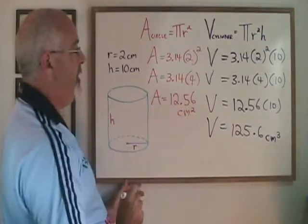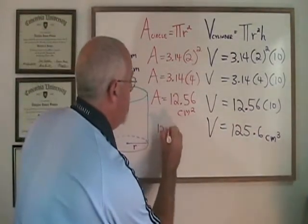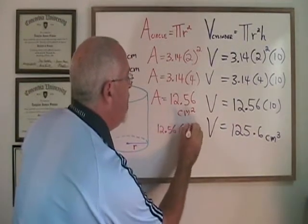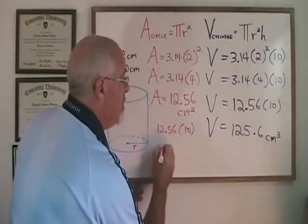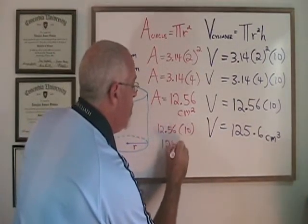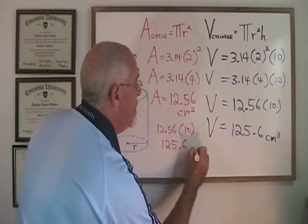If we take this 12.56 and multiply it by the height 10 of that cylinder, we get the same answer as we did before for volume 125.6 centimeters cubed.